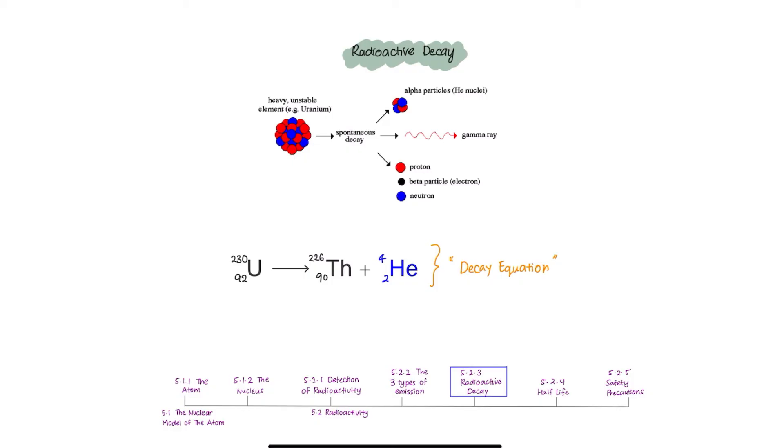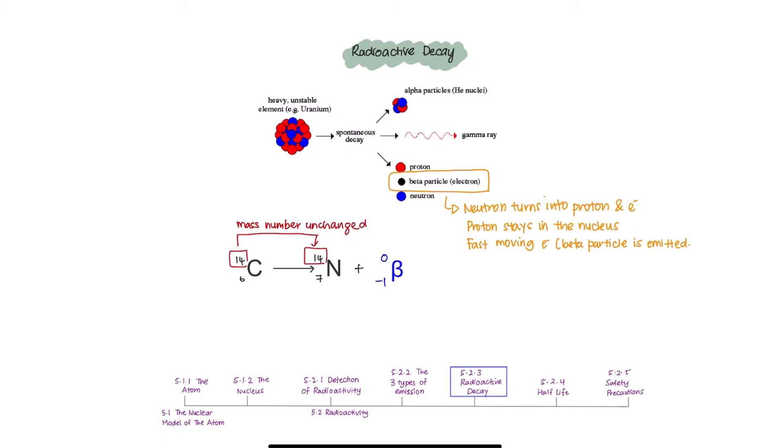What happens when a nucleus emits beta particles? A neutron turns into a proton and electron. Proton stays in the nucleus. Fast-moving electron, beta particle, are emitted. Mass number is unchanged. Atomic, which is proton number, is increased by one.